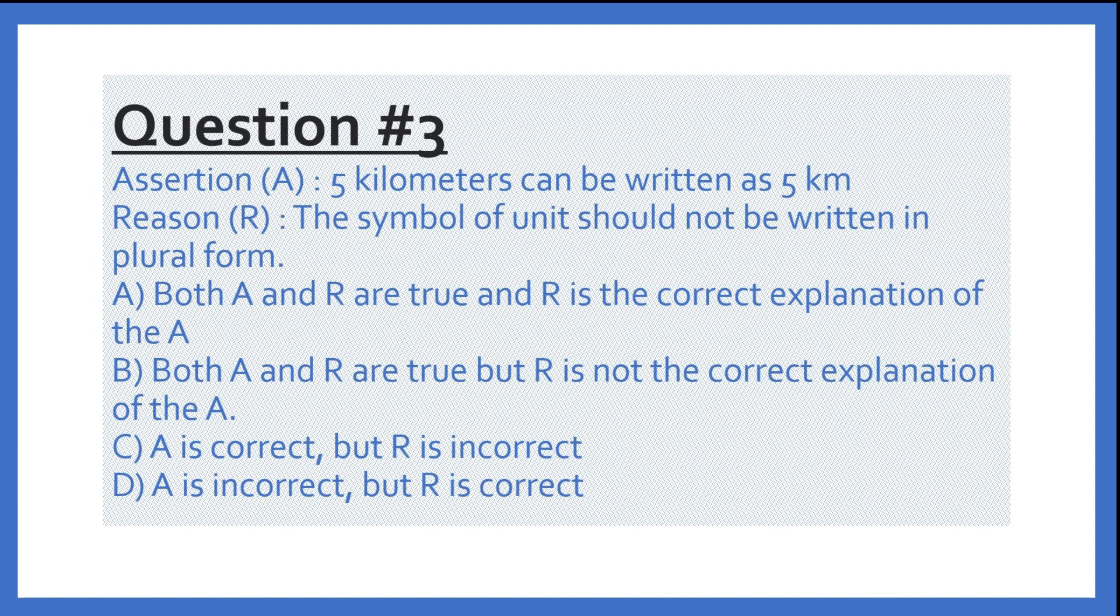Next question. Question 3 is assertion and reason type. I will read it. Assertion says: 5 kilometers can be written as 5 km. Right? So 5 kilometers can be written as 5 km. What is plural? When you are writing symbol there will not be any plural. So 5 kilometers, this assertion is true. Next reason: the symbol of unit should not be written in plural form. That is right. And it explains the assertion very well.